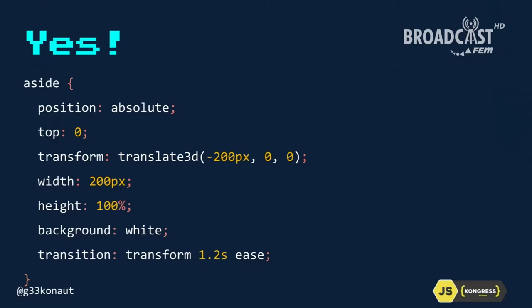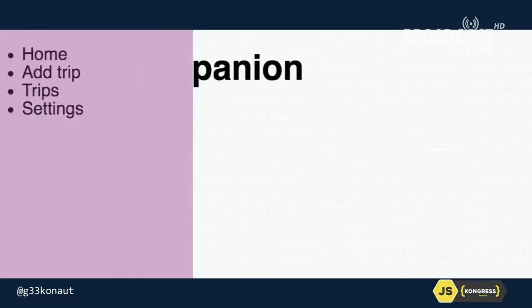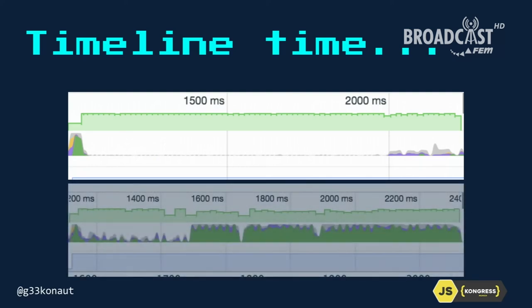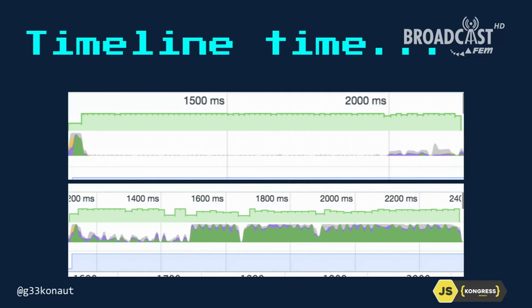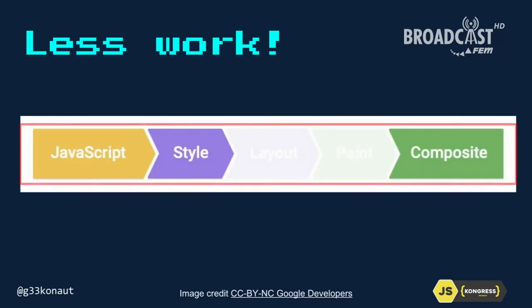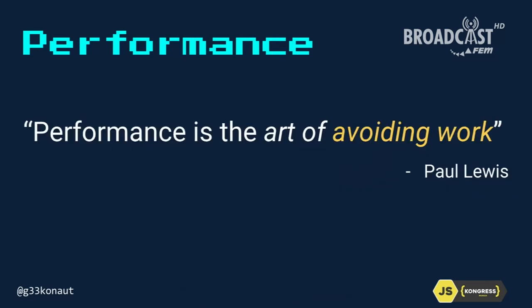JavaScript changes the class, which changes the style. Style changes trigger layout, which moves things around, then repainting, then compositing. We basically want to avoid the painting work. Using `translate3D` instead of `left` does exactly that — no more paint disco. The timeline is empty during the transition period. That's really nice. Paul Lewis once said: this is the art of avoiding work.